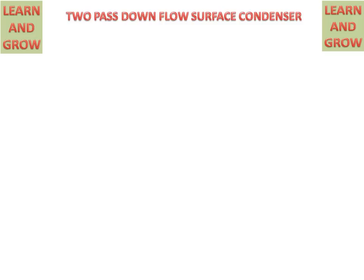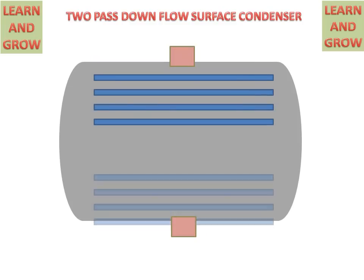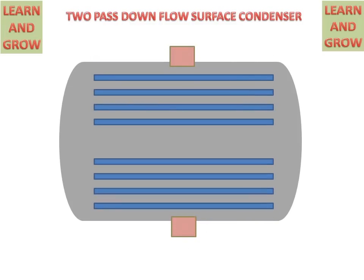First we will discuss all the parts of the 2 pass downflow surface condenser. We have a chamber for the condenser where steam will come from the top side and condensate will go from the down side. Tubes are there in 2 sections, upper section and lower section.